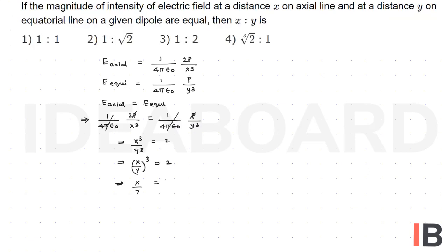Or x by y whole cube is equal to 2. Then taking cube root, x by y is equal to cube root of 2 by 1. So here the ratio is cube root of 2 is to 1, so fourth option is the right option.